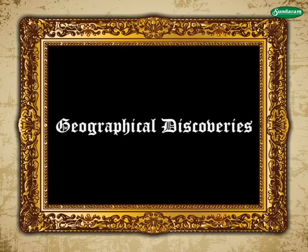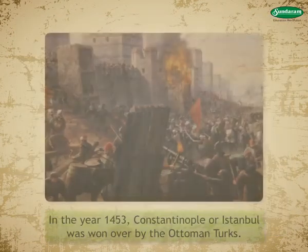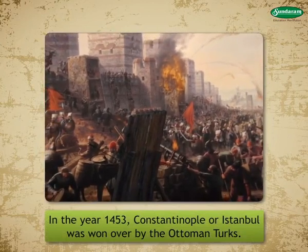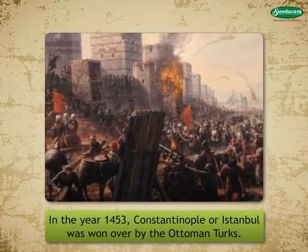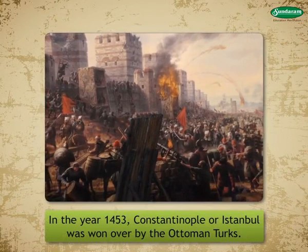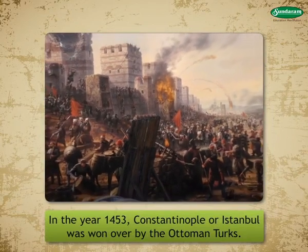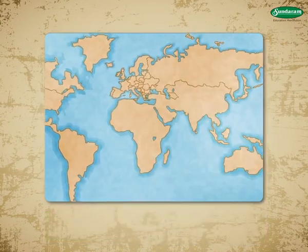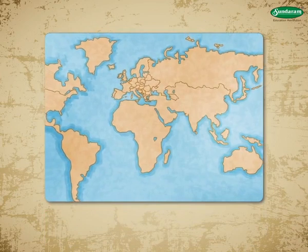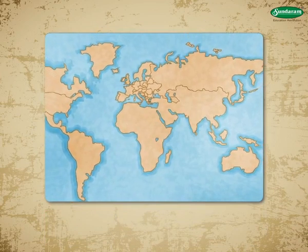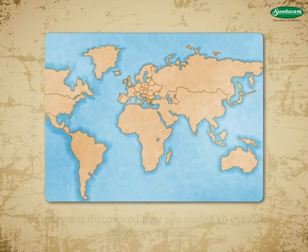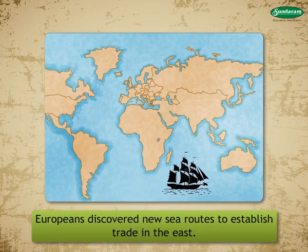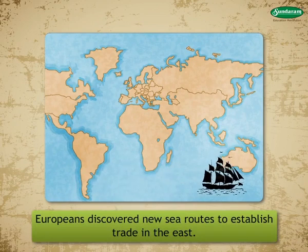Geographical Discoveries: In the year 1453, Constantinople — or Istanbul — was won over by the Ottoman Turks. In the event of growing business but blockage of the terrestrial routes, the Europeans discovered new sea routes to establish trade in the east.